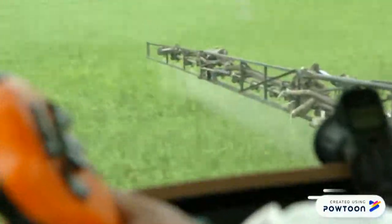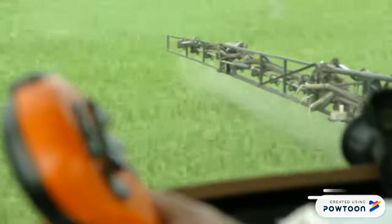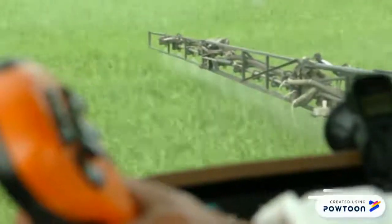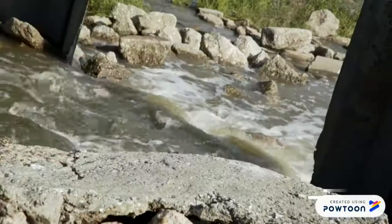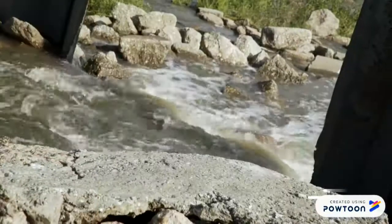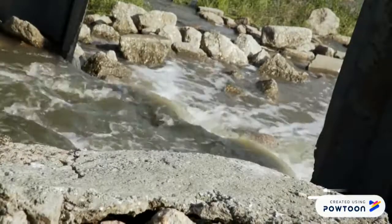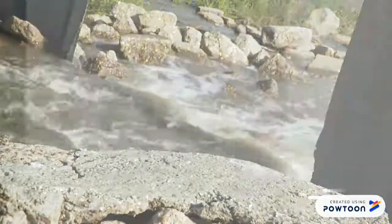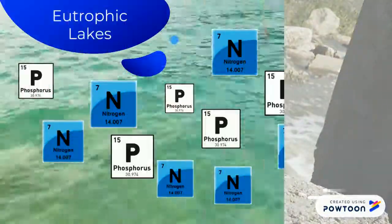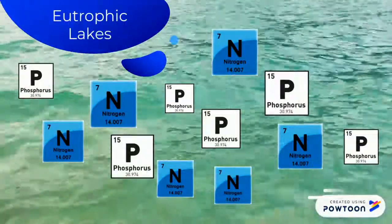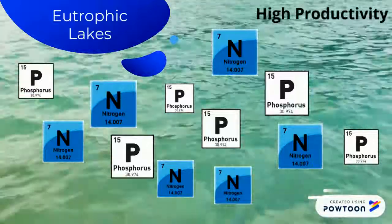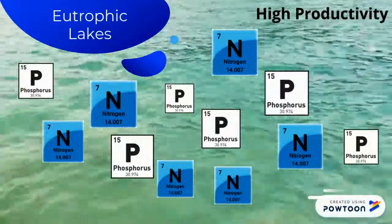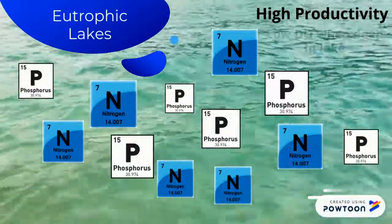When farmers fertilize their fields, the excess nutrients run off into streams or rivers, which then feed the lake. Eutrophic lakes also have high productivity and areas of low dissolved oxygen.